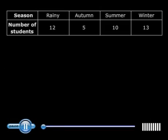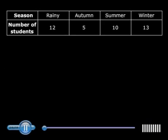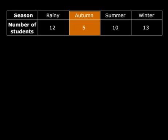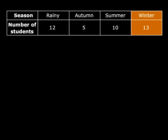Look at this table. It gives you the number of students of a particular class who like different seasons. 12 like rainy season, 5 autumn, 10 summer and 13 winter. Now can you represent this data in the form of a pictograph?